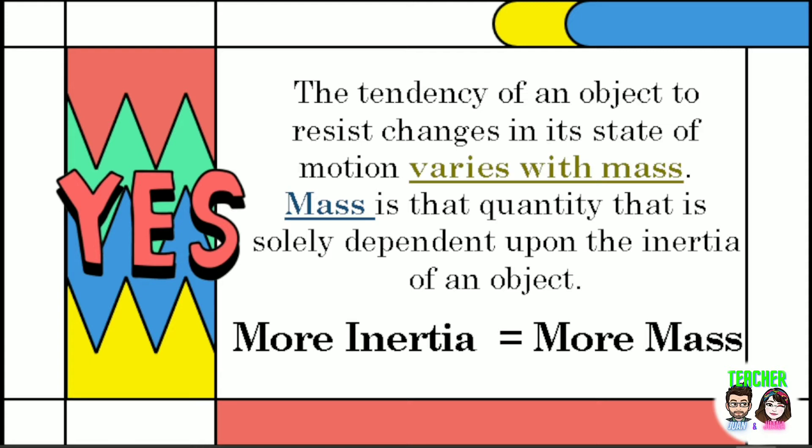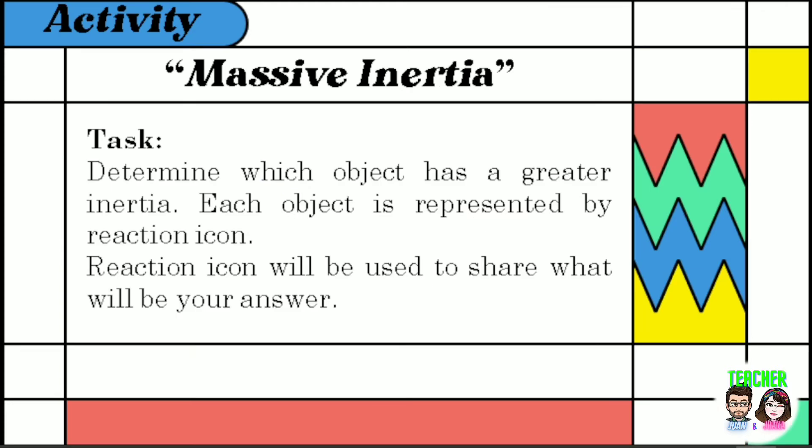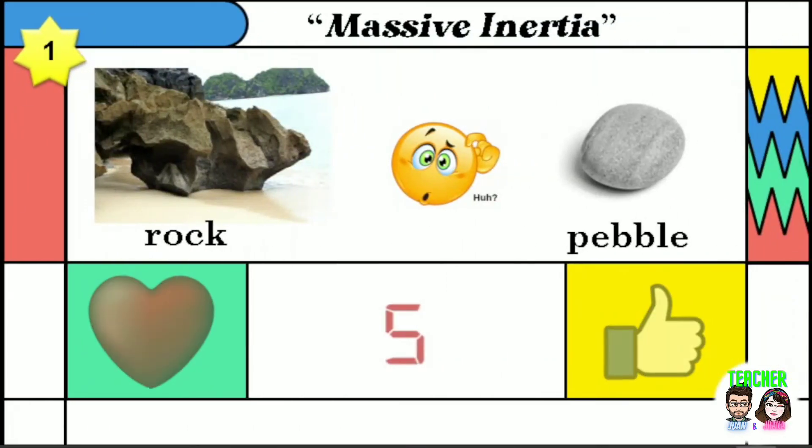Applying that concept, let us have an activity. This activity is entitled massive inertia, you will determine which object has a greater inertia. Each object is represented by reaction icon, and that reaction icon will be used to share what will be your answer. You can click the reaction icon, or you may send it through the comment section. I will give you 5 seconds to choose the correct answer. Let's start.